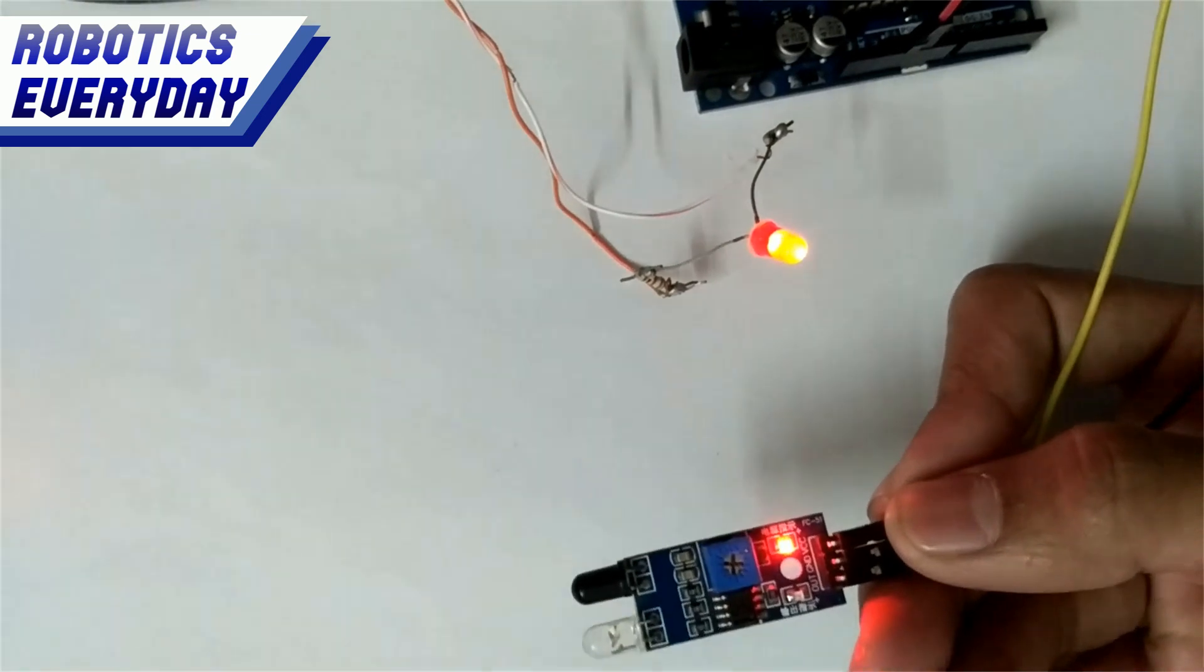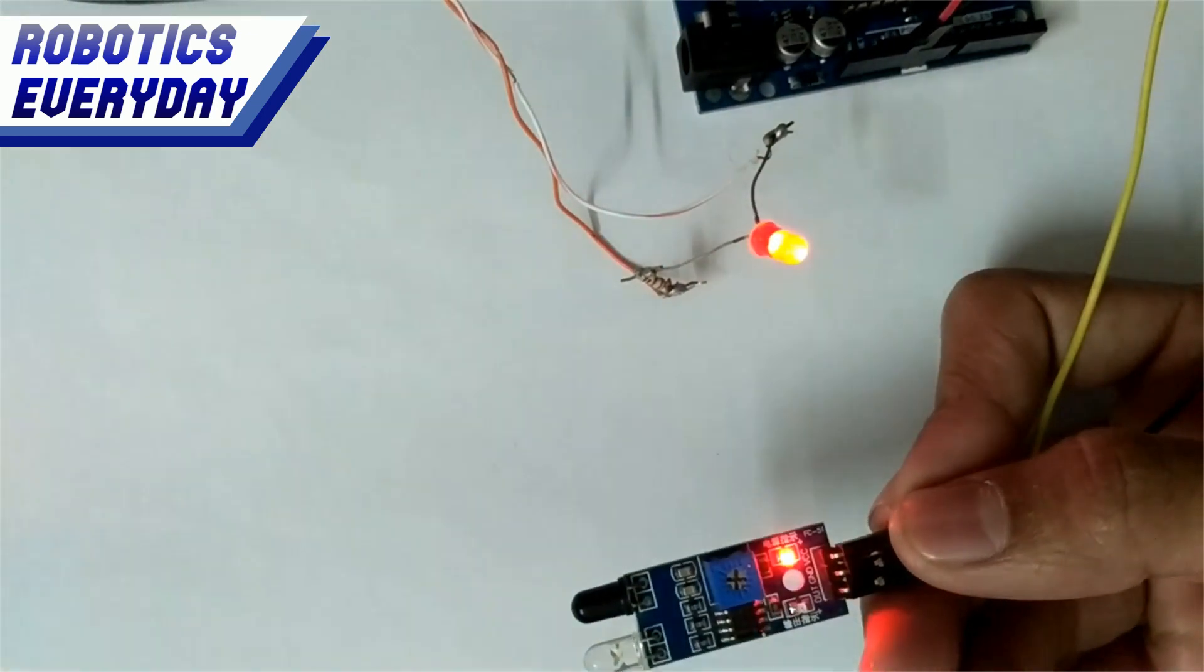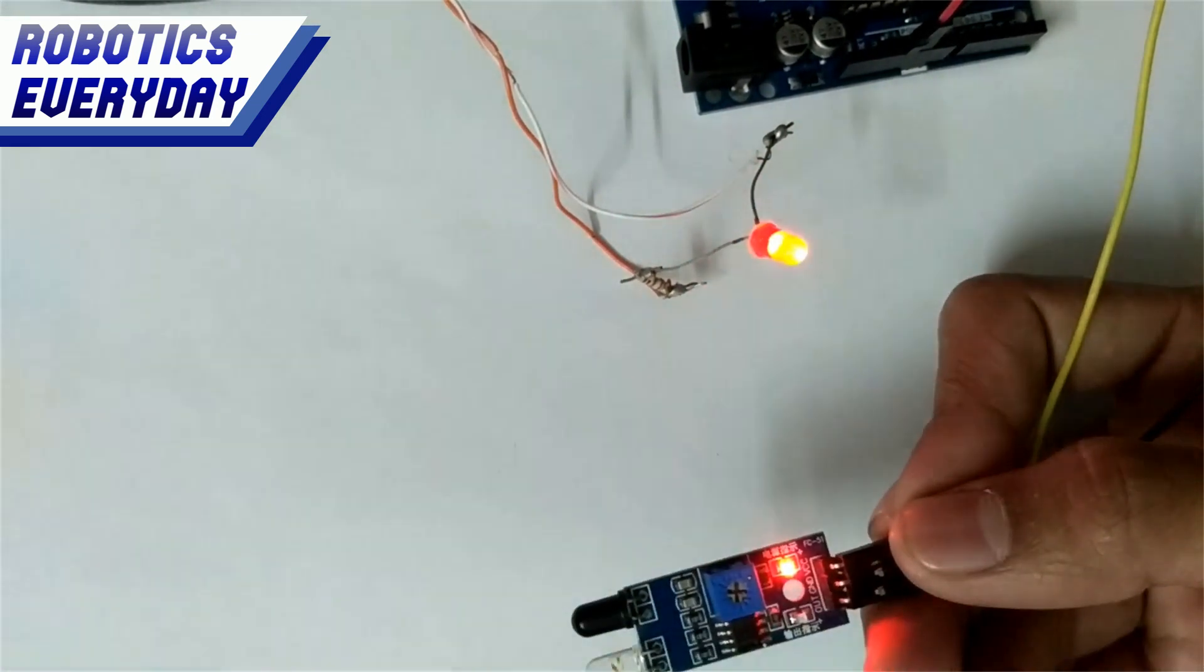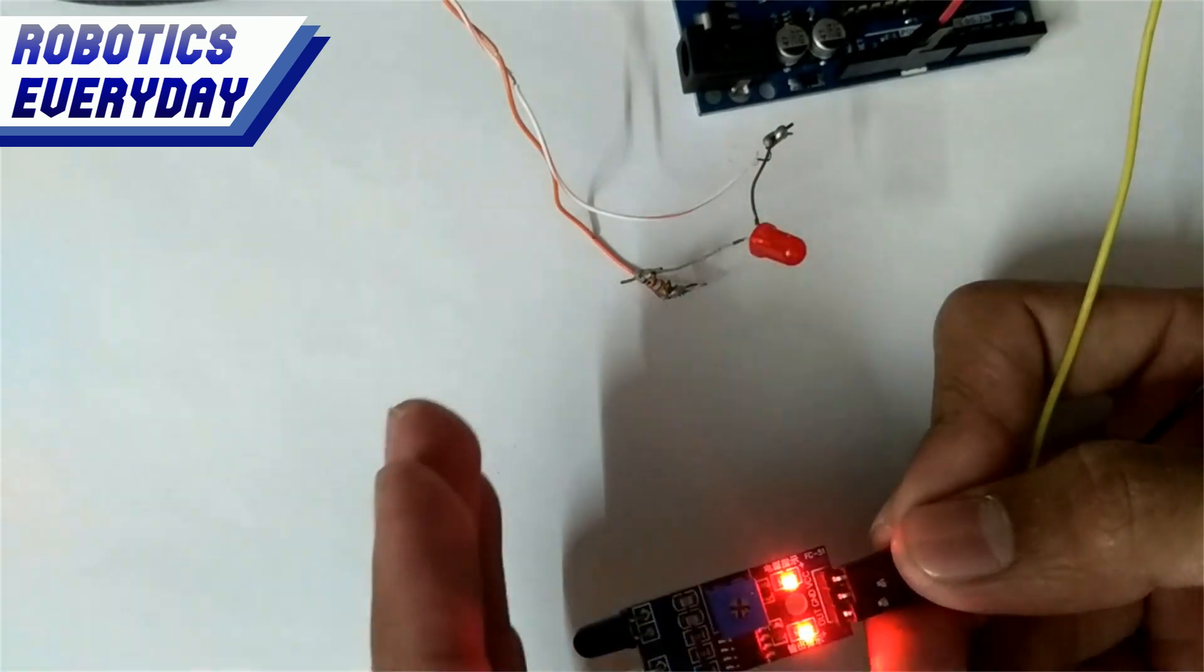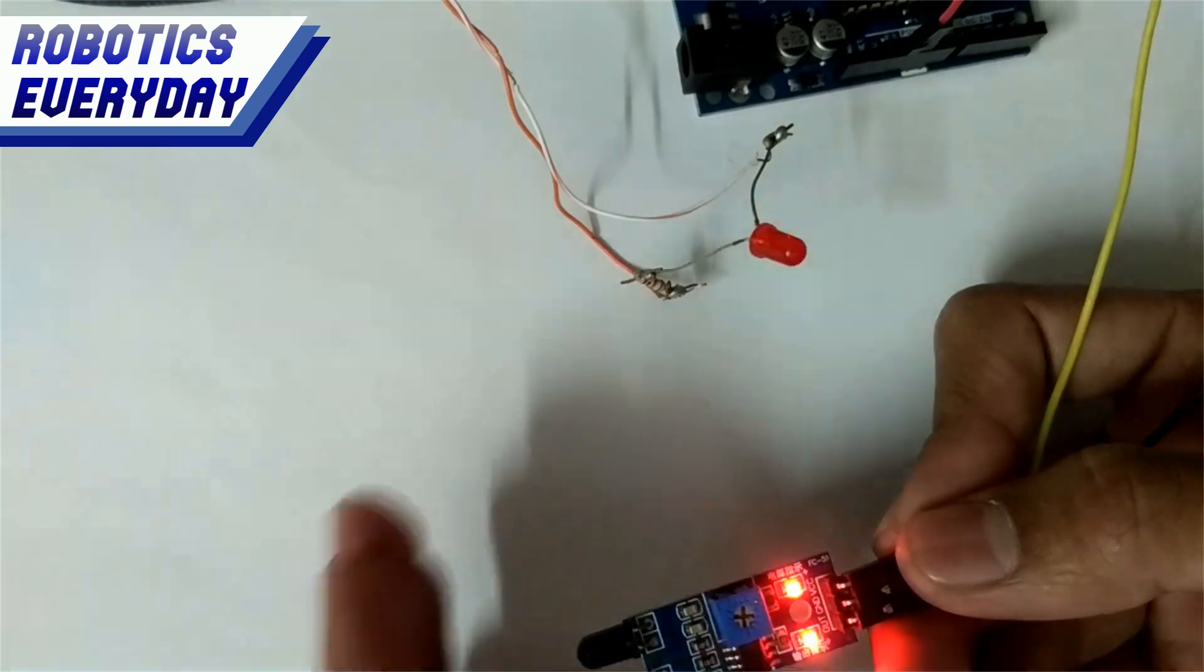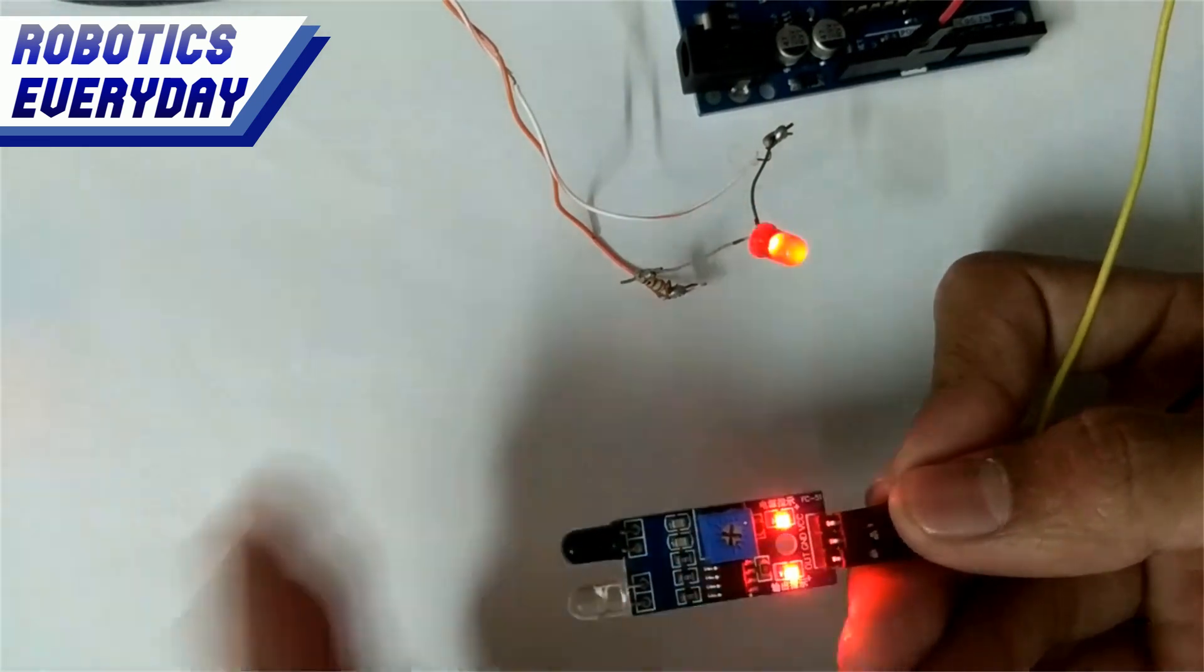We have refined the code a little bit and changed the logic to turn the LED on and off. Now, whenever an object comes in front of the sensor, the LED turns off. Otherwise, it remains on. This project and the infrared sensor have many applications.